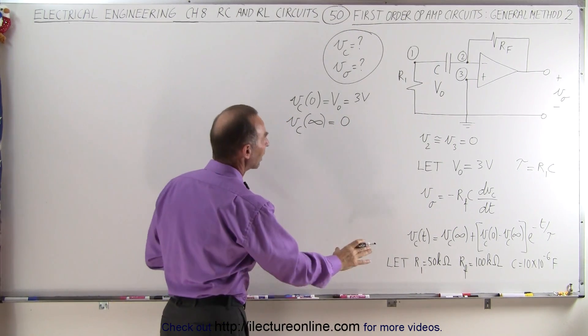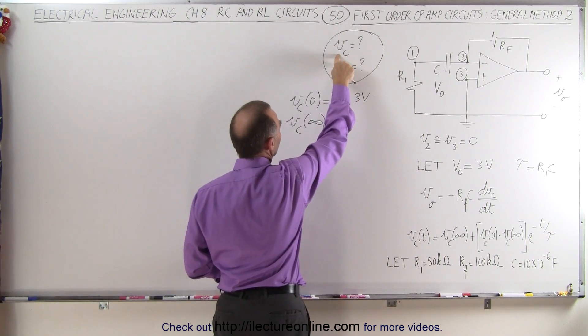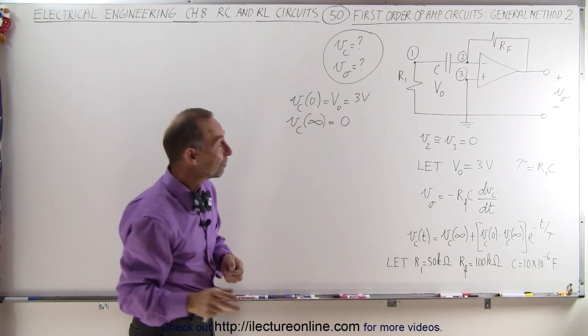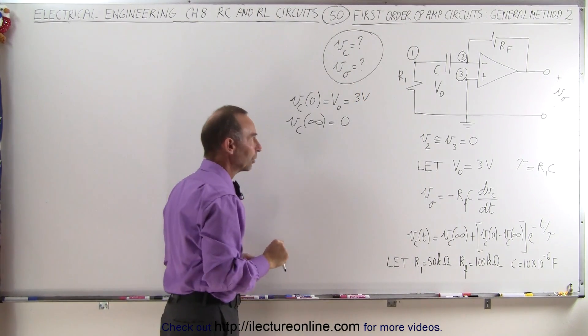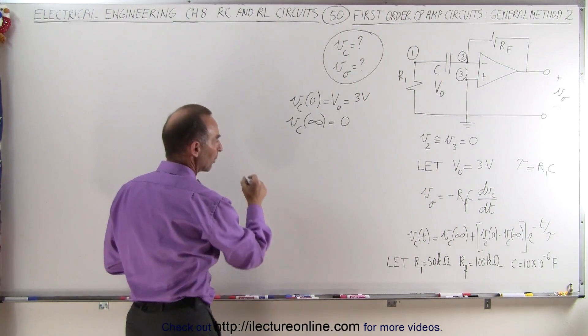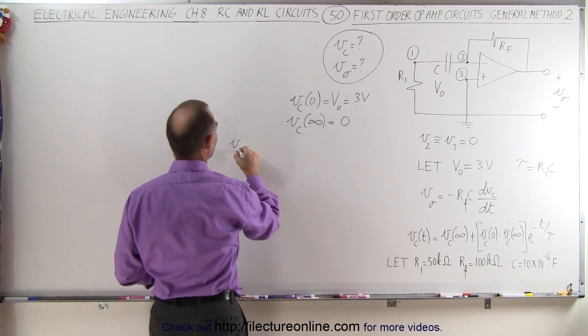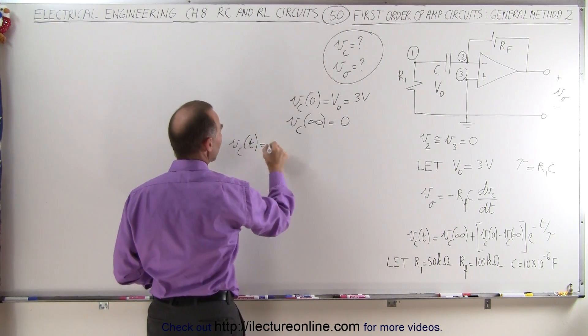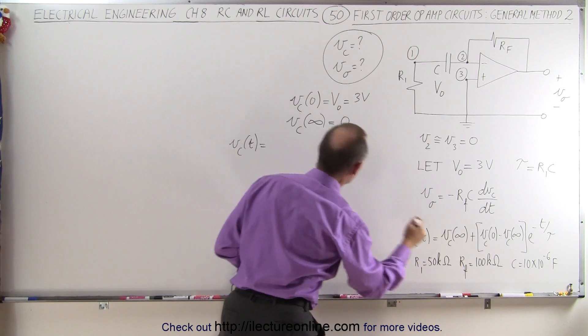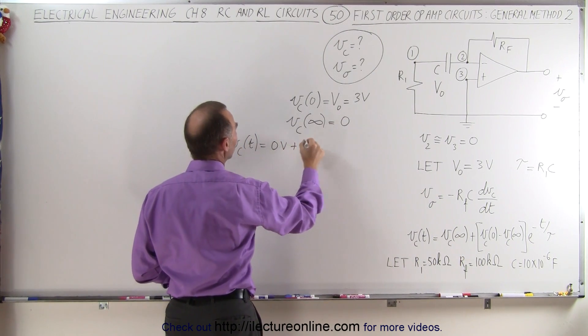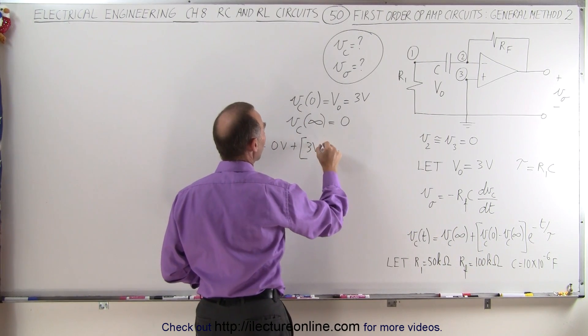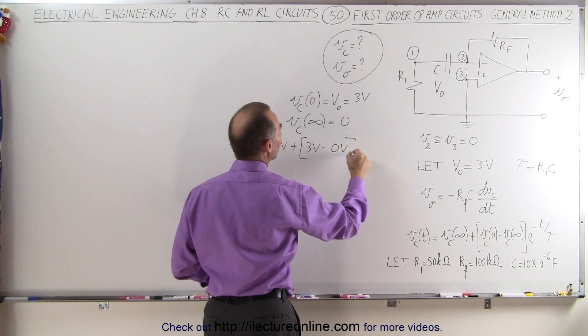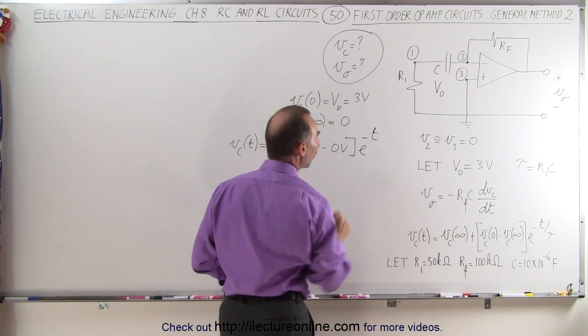Now we're ready to plug that in and find the voltage across the capacitor as a function of time, and once we've done that we use the same equation then to find the voltage of the output of the circuit. So here we're writing that the voltage across the capacitor as a function of time is equal to the voltage at infinity, which is 0 volts, plus the difference between the voltage that we started out with, 3 volts minus 0 volts, times e to the minus t over tau.